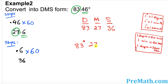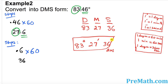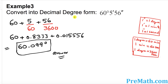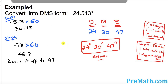Here is another example: converting 60 degrees, 5 minutes, and 56 seconds to decimal degrees. Same process — split them up, divide the minutes part by 60 and the seconds part by 3600, put those fractions into decimals, add them up, and that is your answer.